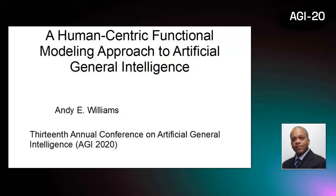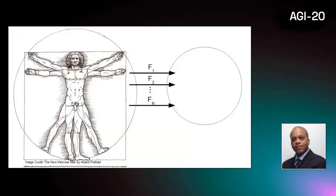Human-centric functional modeling is a way to build simple models that capture the behavior of complex systems, so we can use those models to reach powerful new conclusions.